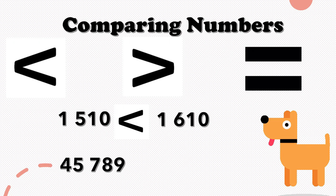We use the equal sign to indicate that both numbers are the same. For example, 45,789 is the same as 45,789, so we use the equal sign.